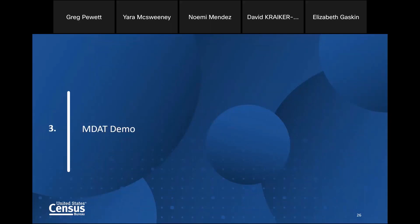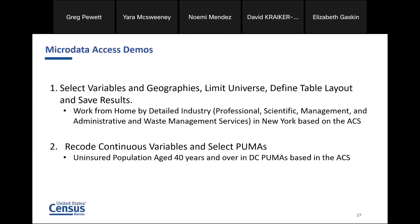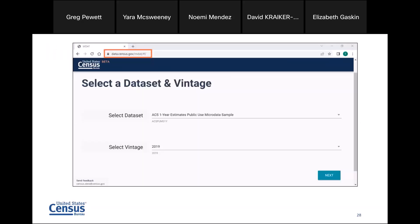Now I'm going to go into the MDAT demo. These are the two examples I'm going to do. The first one: I'm going to show you how to select your variables and geographies, how to limit your universe, how to define your table, and then save your results. The second example: we're going to do what's called a recode, where we'll look at age data and select a range of ages. Then we're going to use PUMAs. The first example uses the state of New York; the second one we'll drill down and use PUMAs. Let's go to the MDAT tool — here's the address.